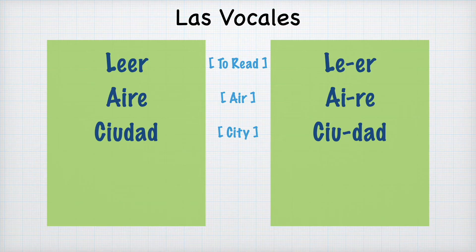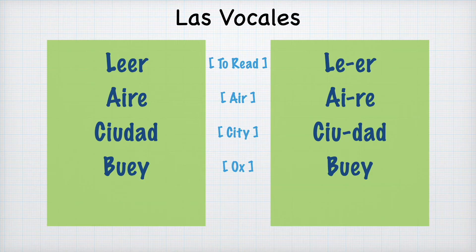In Spanish, there's such a thing as a triphthong, made by one strong vowel between two weak vowels, and they stay part of the same syllable. For example, the word way — it's actually just one syllable, because the letter Y is treated like the I.